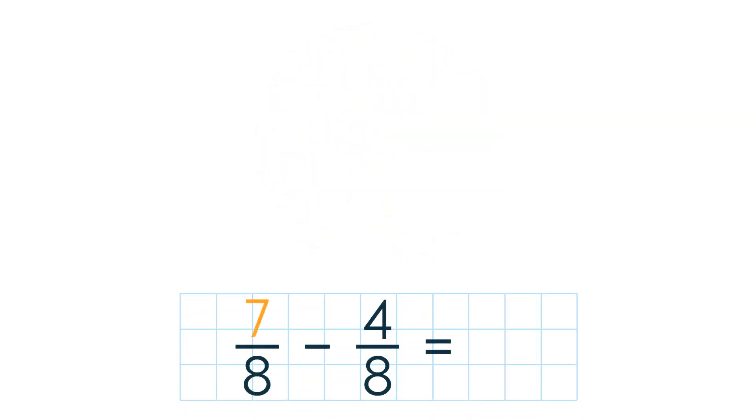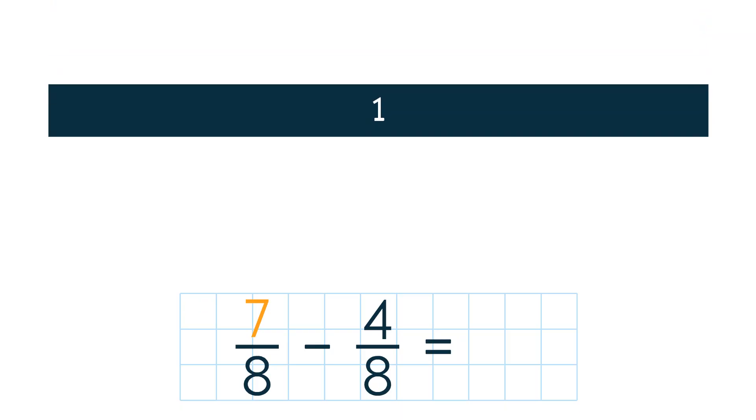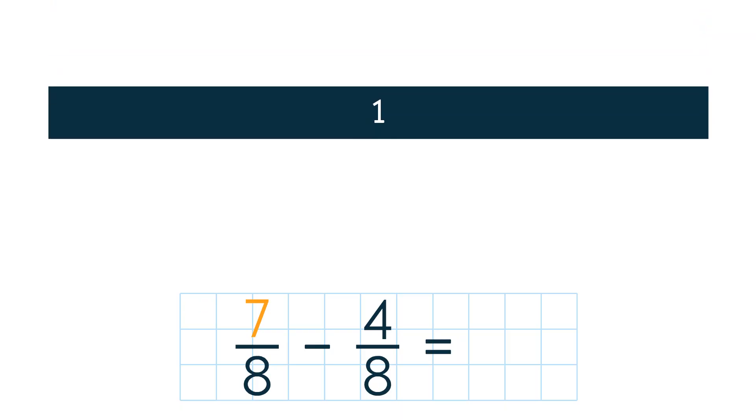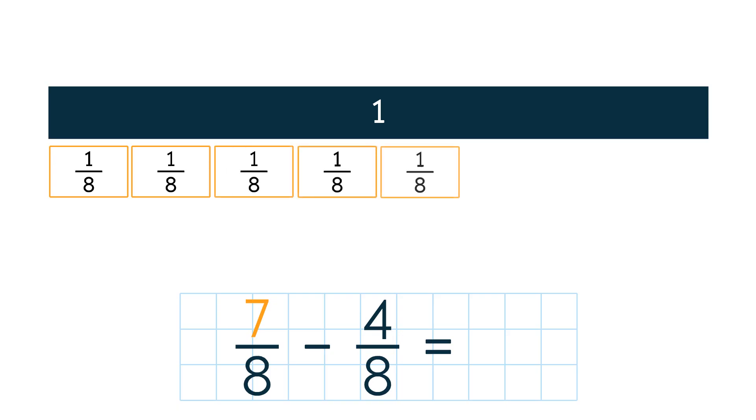Let's solve the same problem using fraction strips. The one strip represents the whole pizza. Each 1 eighth part represents 1 eighth of the pizza. We shade 7 eighths.